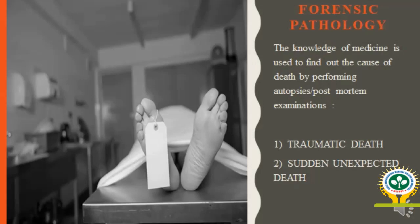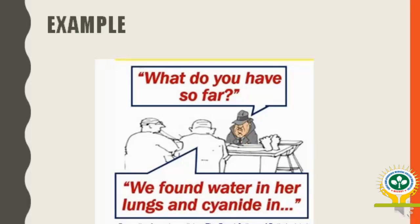The first branch is Forensic Pathology. In Forensic Pathology, the knowledge of medicine is used to find out the cause of death by performing autopsies and post-mortem examinations. The death can be natural, unnatural, suicidal, accidental, or homicidal. For example, in a post-mortem examination, the forensic expert may report: 'We found water in the lungs — this can be a typical case of trauma.'